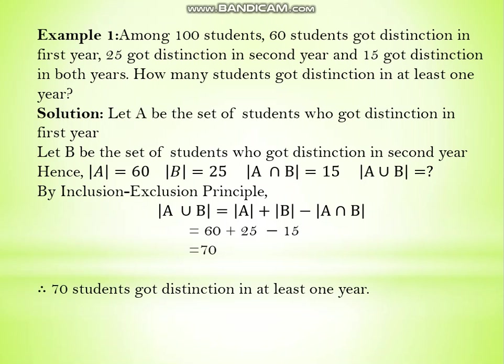At least one year means distinction in either the first year or the second year or both — this is the union case. Let A be the set of students who got distinction in the first year and B for the second year. So |A| = 60, |B| = 25, and |A∩B| = 15. By inclusion-exclusion, |A∪B| = 60 + 25 − 15 = 70 students got distinction in at least one year.